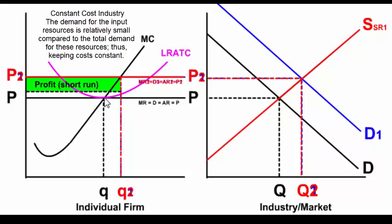Let's put this all together. Originally, we were in long run equilibrium, and then there was an increase in demand in the industry or the market. The individual firm is a price taker and must take this market price, so it raises its price and increases its output to where MR is equal to MC.